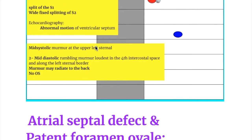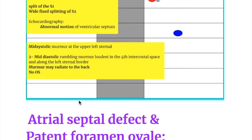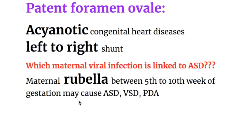In this video we will discuss atrial septal defect and compare it with the patent foramen ovale. Atrial septal defect is an acyanotic congenital heart disease. Other acyanotic congenital heart diseases include ventricular septal defect, patent ductus arteriosus, and coarctation of aorta.